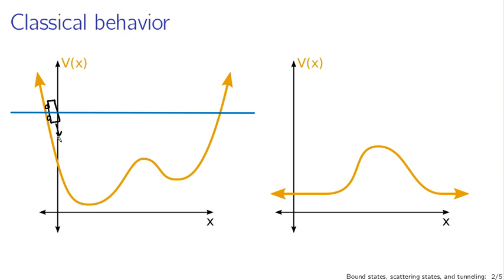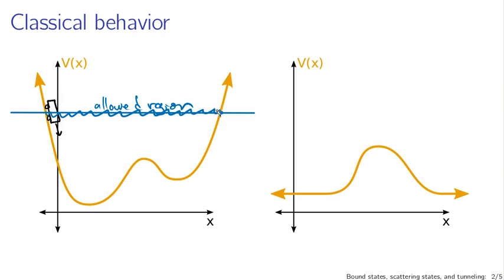As the cart rolls downhill it gains kinetic energy, having its maximum kinetic energy at the lowest point. Then it rolls back up until it runs out of kinetic energy at the far point. So we have an allowed region here. The cart will never be found at higher potentials on either side. Our allowed region covers the region between these two points, which are called turning points, since that's where the cart turns around.